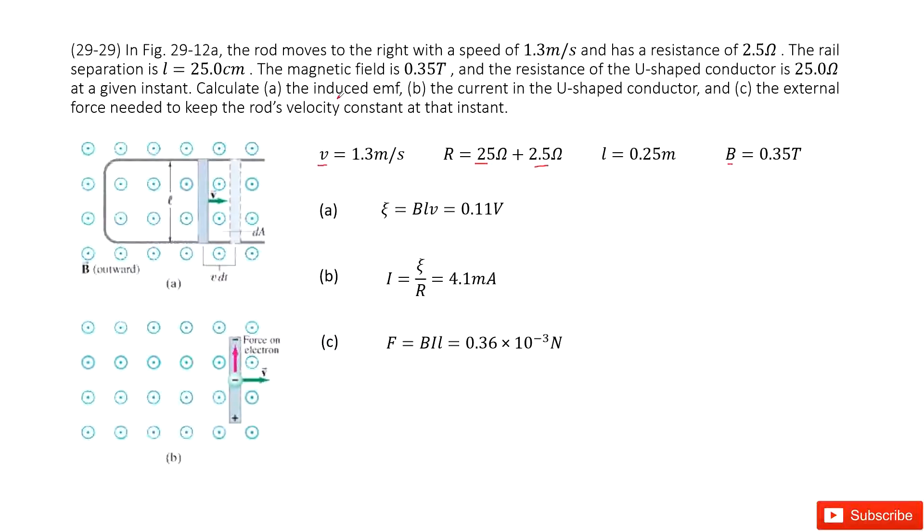First one, calculate the induced EMF. For the moving bar in the magnetic field, the induced EMF in our textbook gives us ε = BℓV. So we input all the given quantities and get the answer.